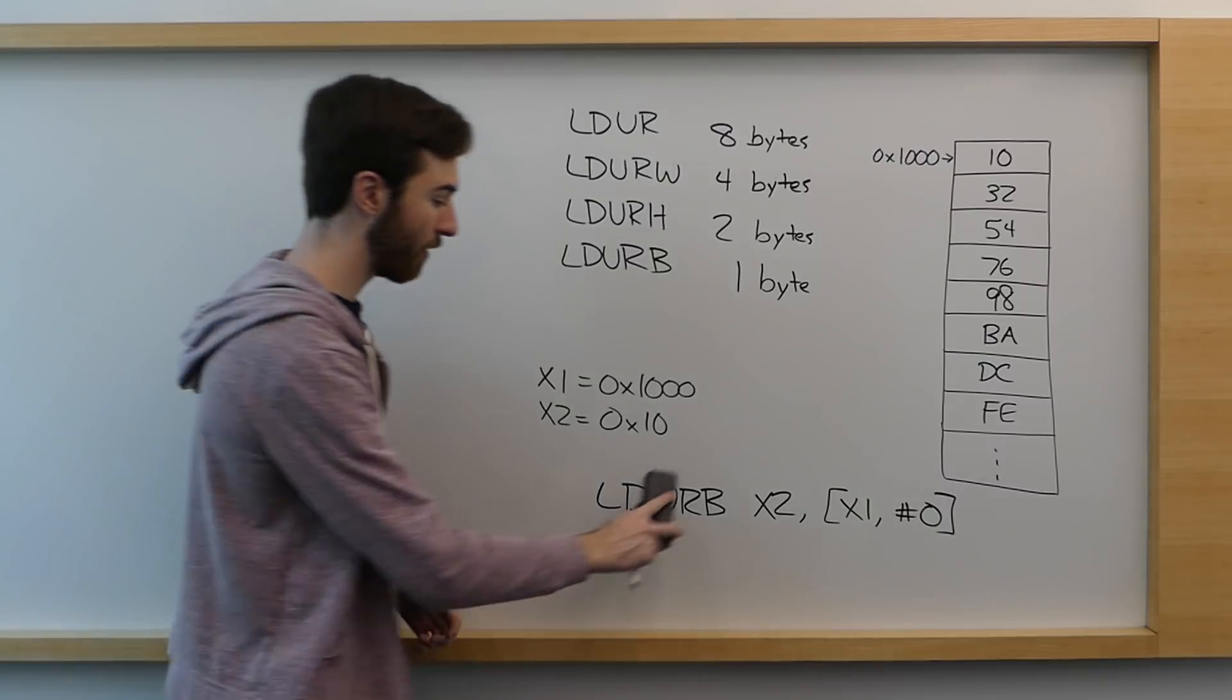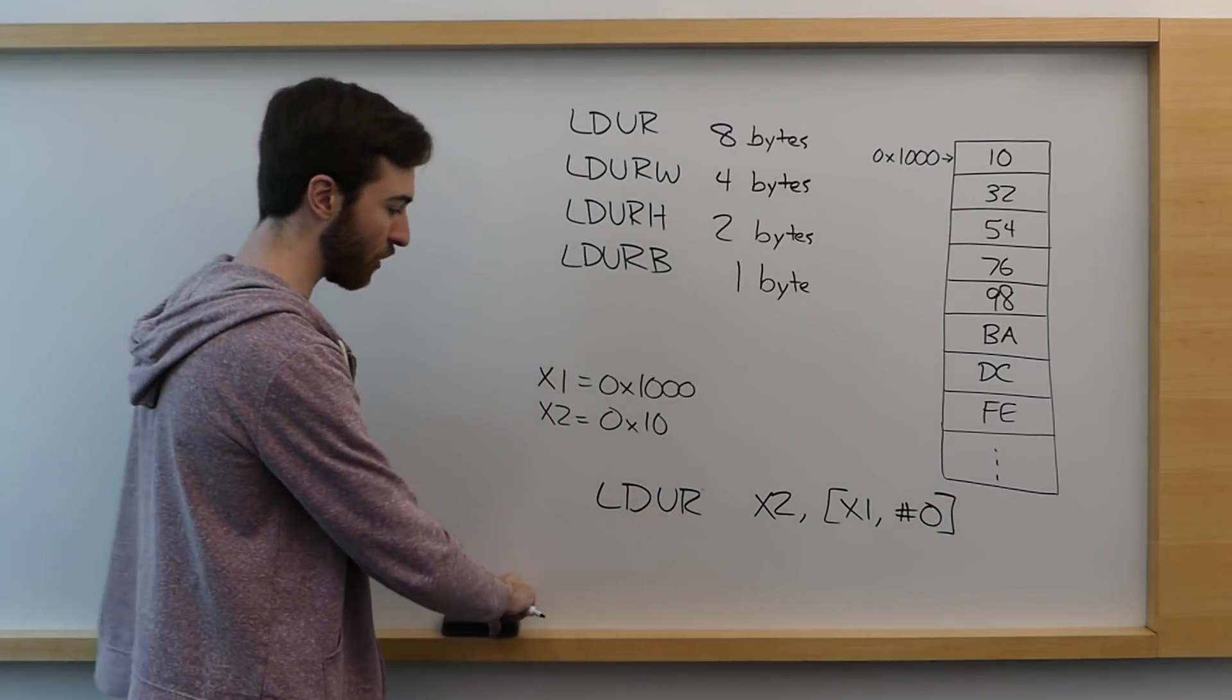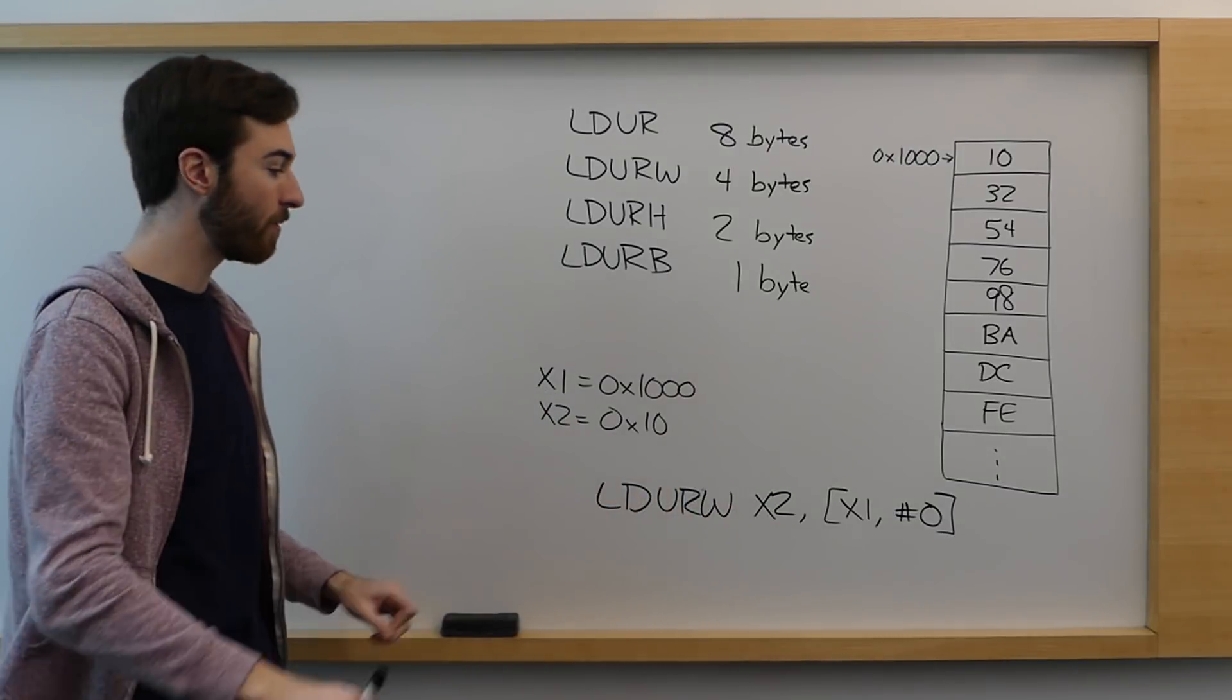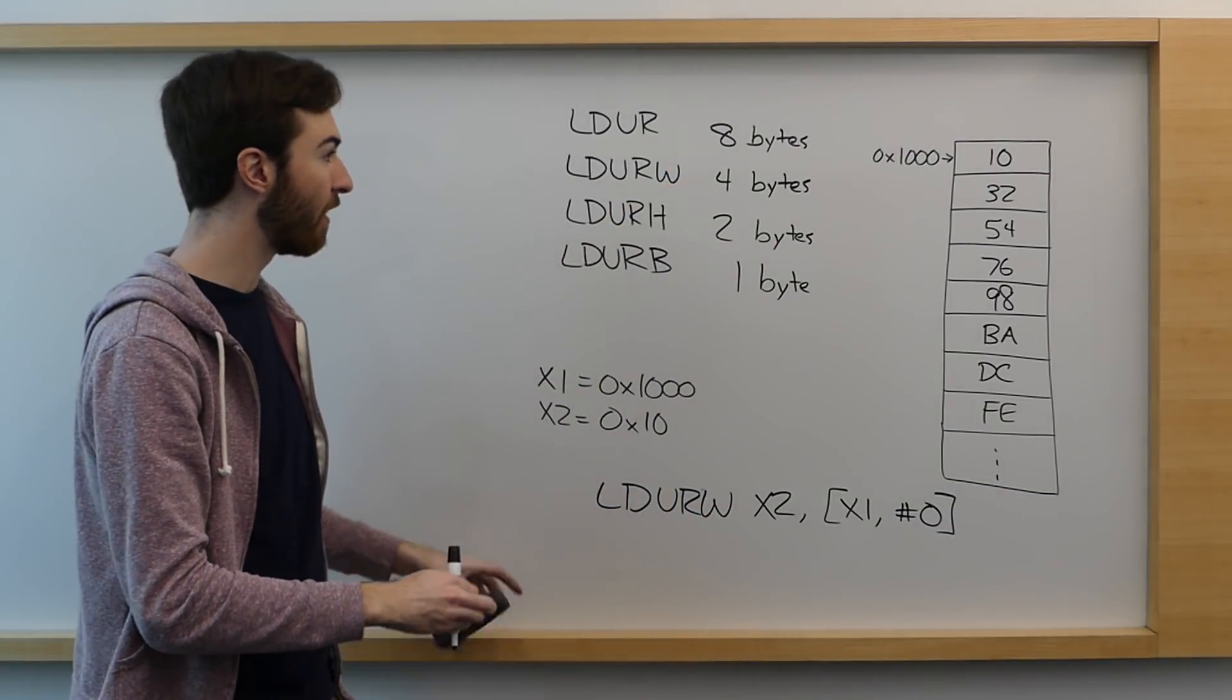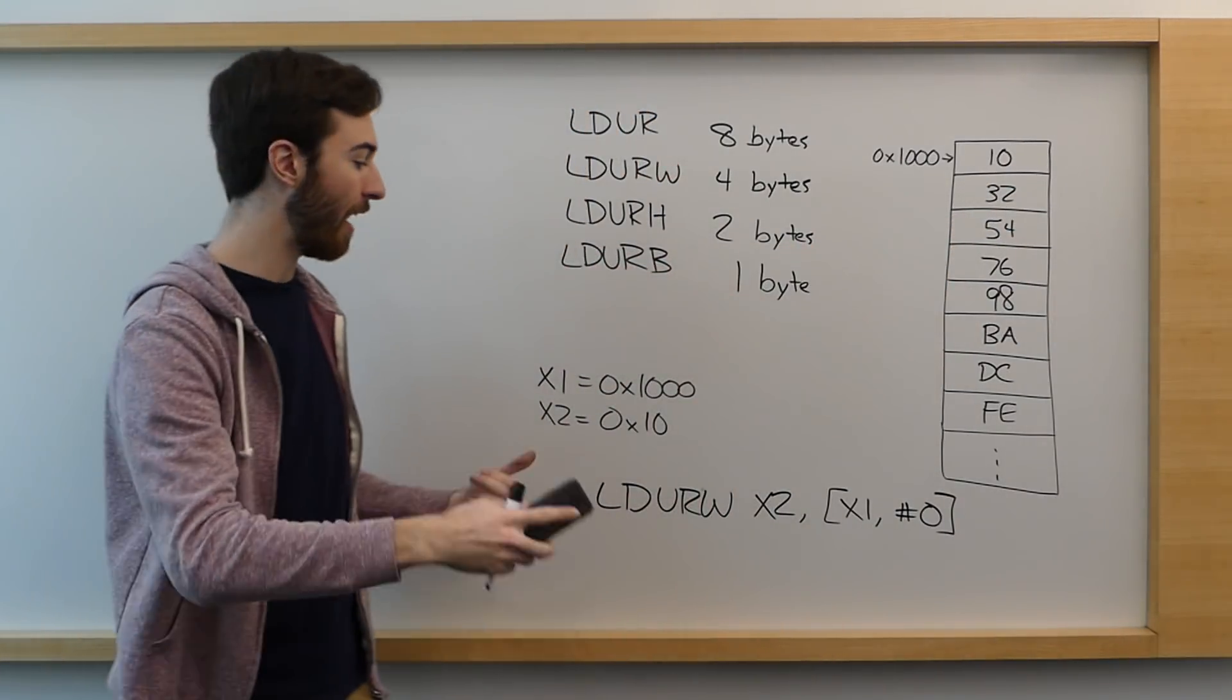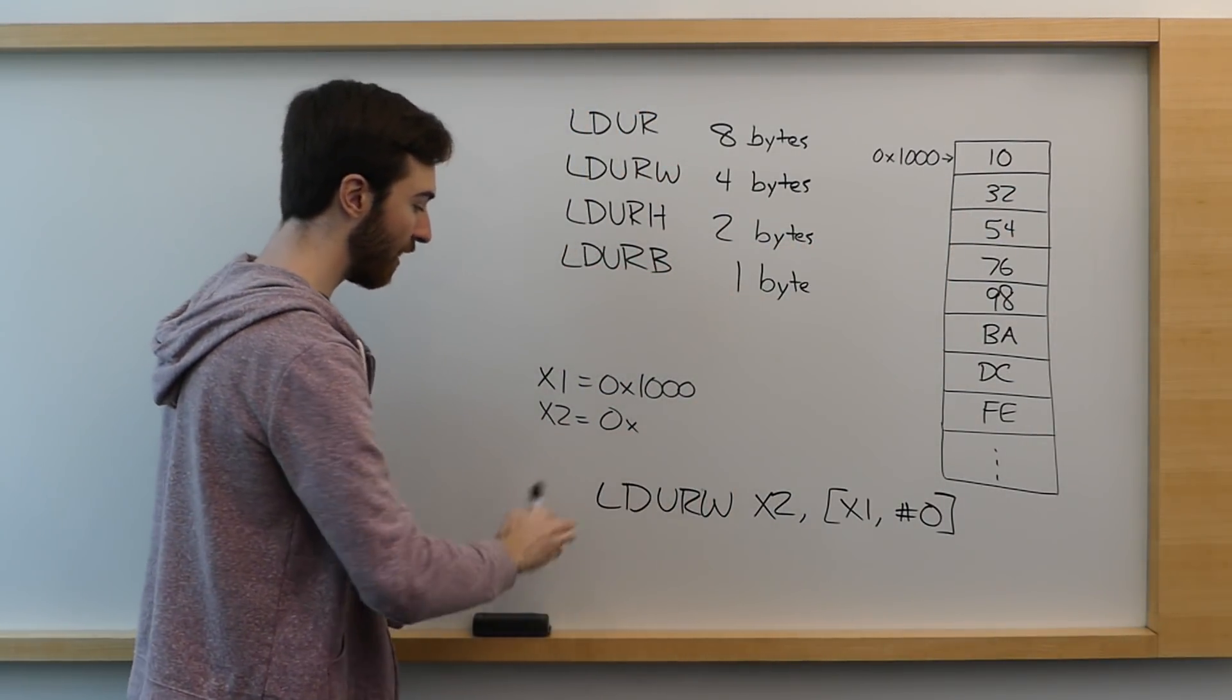Contrast that with, I won't go through all of them, but just as an example, the LDURW, which will take four bytes from memory, it will read these four bytes sequentially and assign those to the register.